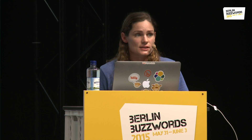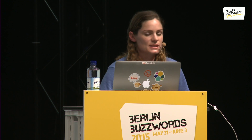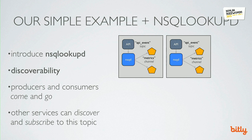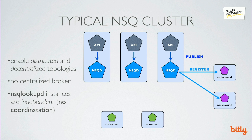The NSQD instances maintain a persistent TCP connection to the Lookup D instances and register themselves as a producer for a given topic and all the channels they know about. This means that consumers can query Lookup D for topic locations rather than hard-coding them. When they get the IP addresses of these producers, they union them all together and then subscribe to all of them directly. Over time, these consumers will learn about the existence of new producers and be able to route around failures. Because we have co-located NSQD instances with our API, we've seamlessly created three shards that our external stream feeds into, without needing to configure that up front.